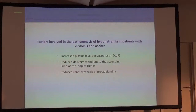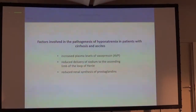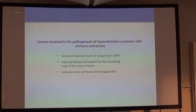The reduced capacity of cirrhosis patients to produce and eliminate free water is related to three main factors: the increased plasma level of vasopressin, the reduced delivery of sodium to the diluting segment of the loop of Henle, and the reduced production of prostaglandins — particularly PGE2 in the kidney — because PGE2 counteracts the effect of vasopressin on the principal cell in the collecting duct.